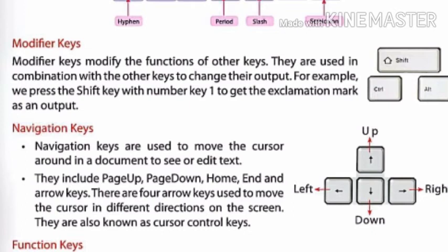Navigation keys are used to move the cursor around in the document to see or edit text. They include page up, page down, home, end, and arrow keys. There are 4 arrow keys used to move the cursor in different directions on the screen. They are also known as cursor control keys.